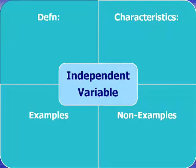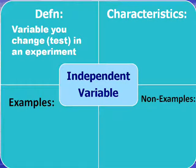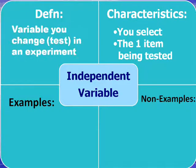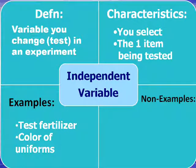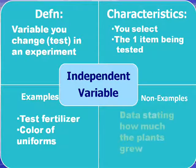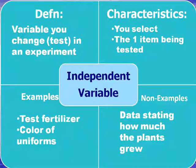To recap the independent variable: it's the variable that you change or test in an experiment. It's always the object you select and the one item being tested — for example, the fertilizer. Another example: if we wanted to see if maroon band uniforms were cooler than white band uniforms, the color of the uniforms is what we're testing. Non-examples include data about how much the plants grew, like height, growth rate, or number of leaves — those are all measurements related to the dependent variable.